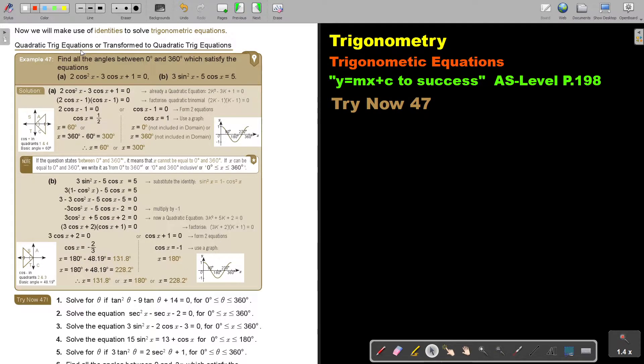Quadratic trig equations or transform to quadratic trig equations. Find all the angles between 0 and 360 which satisfy the equation. Now, this one you can see actually the quadratic equation. This one, it's a little bit disguised. You have to first do something before you will see it. Let's start with number A. As soon as you see degrees, stop and make sure your calculator is on degrees.